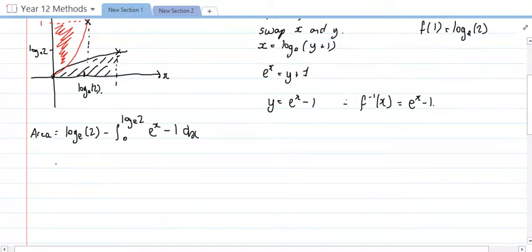Okay, nearly there. So that is log e of 2 minus, now the integral of e to the x is just going to be e to the x, integral of 1 is just x, and that's between log e of 2 and 0.